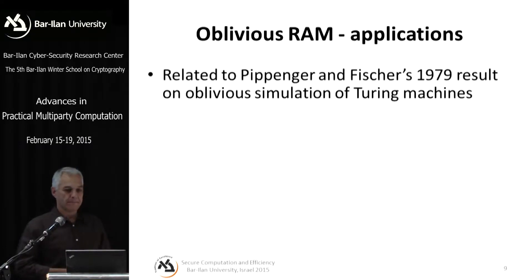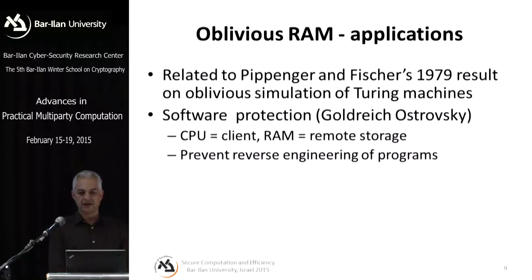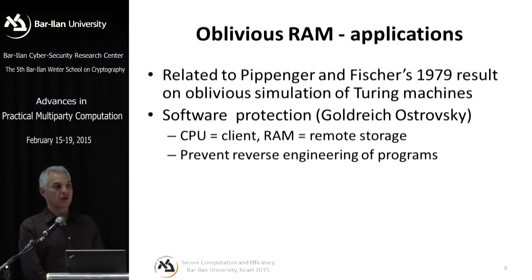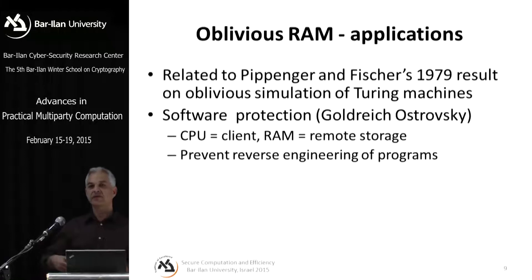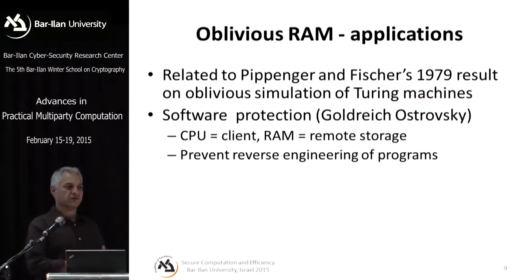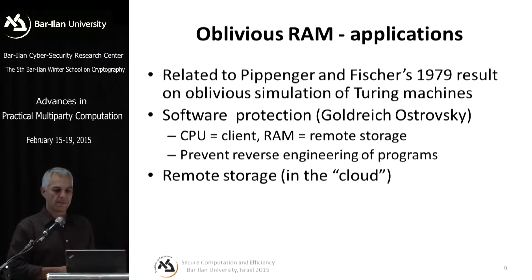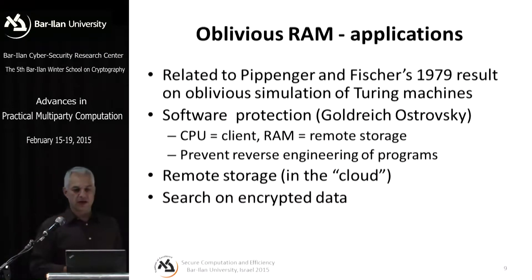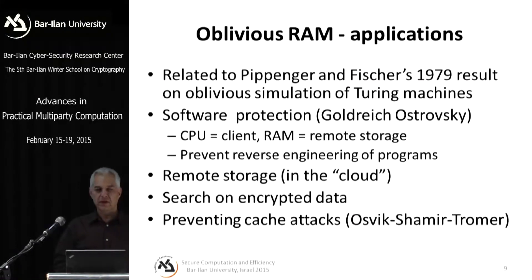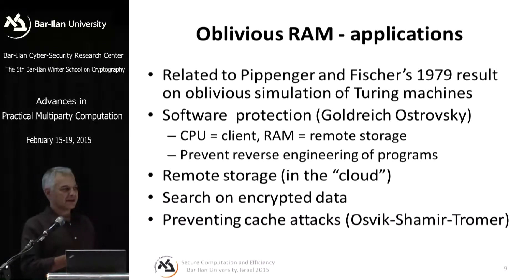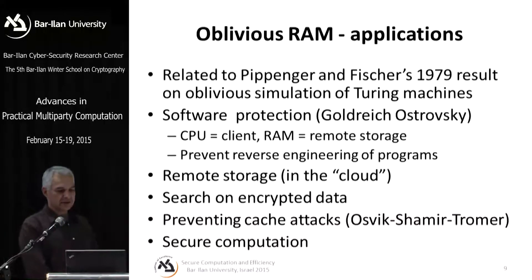ORAM is related to complexity theory results about oblivious simulations. The initial motivation of Goldreich and Ostrovsky, who were the first to work on this, was software protection — the client was a CPU and the server was RAM, and they wanted to hide which items are read from RAM to prevent reverse engineering of programs. Today we talk about remote storage in the cloud. ORAM can also be useful for searching encrypted data, for preventing cache attacks, and for secure computation.